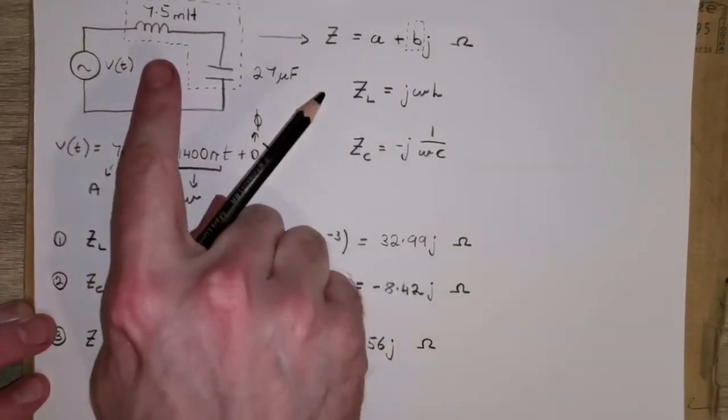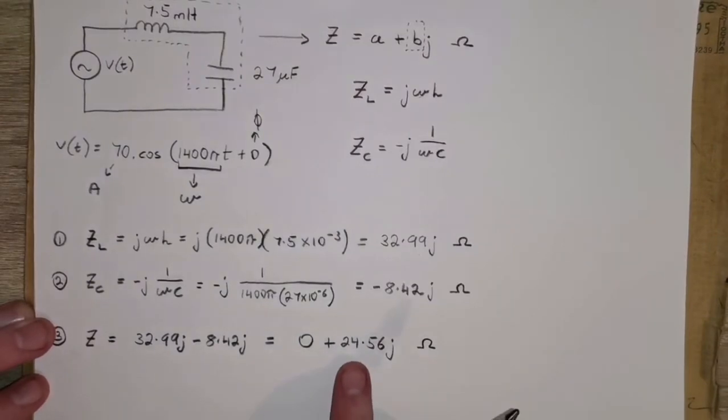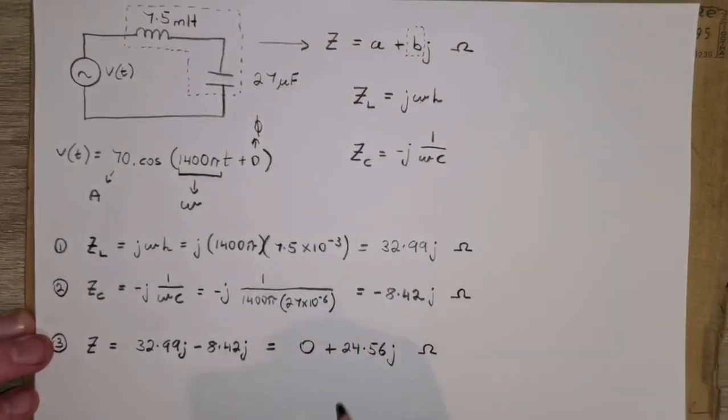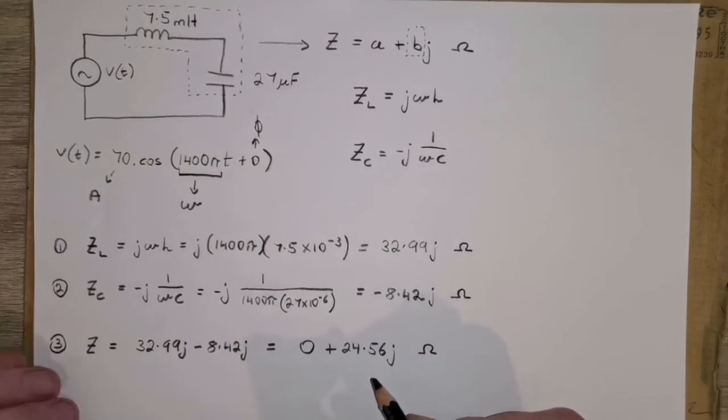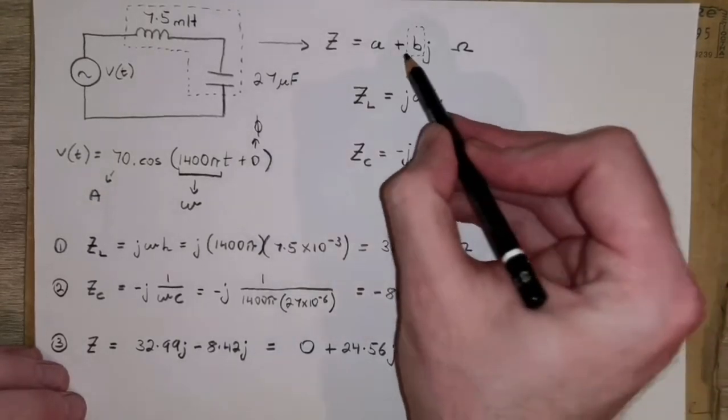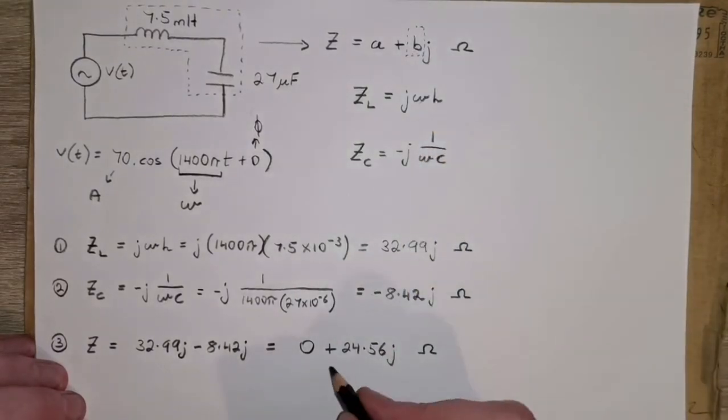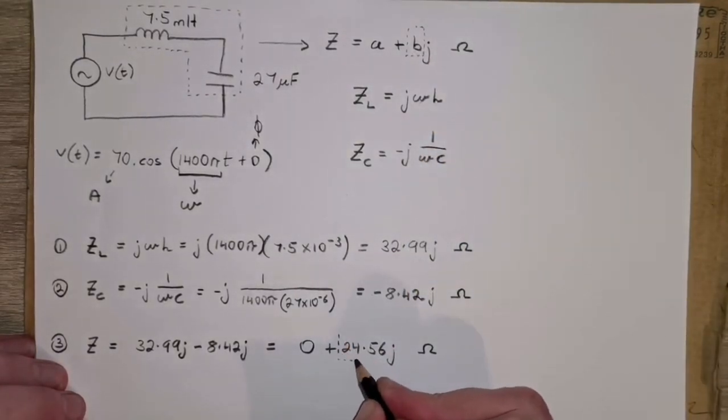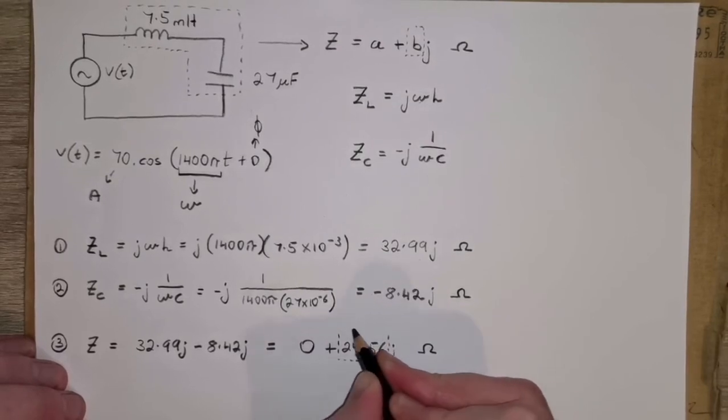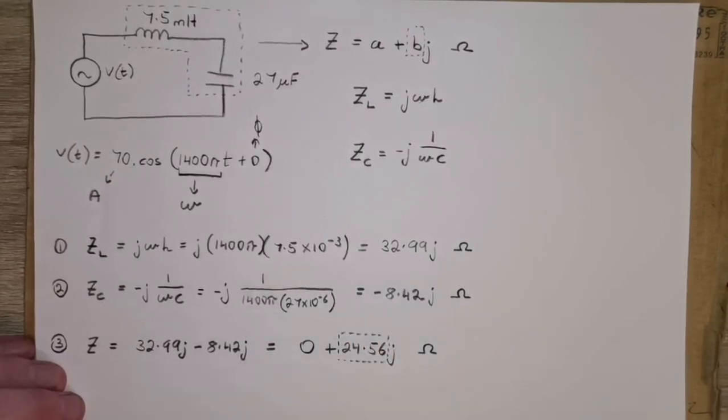Now you can see, because there's no resistance, that the overall impedance is purely imaginary, purely reactive. And if we go back to the question, we're wondering what is the magnitude of the reactive part of this?